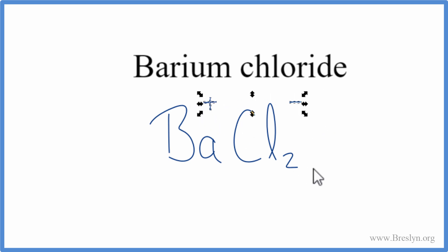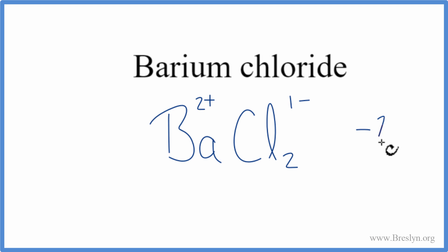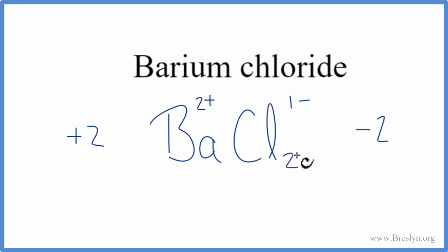Removing the charges, the formula for barium chloride is BaCl₂. We can check our work: barium is 2+, and chlorine is 1−. We have two chlorine atoms, each at −1, so 2 × (−1) = −2. Barium contributes 1 × (+2) = +2. Plus two and minus two add up to zero, so the net charge is zero — making this the correct formula for barium chloride.